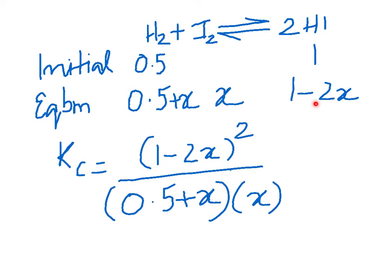the concentration of hydrogen iodide which is 1 minus 2x raised to the power of 2 because of this index here, divided by the concentration of H2 multiplied by the concentration of I2. The concentration of H2 as we said is 0.5 plus x